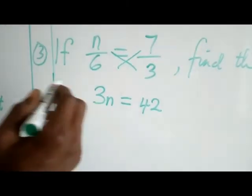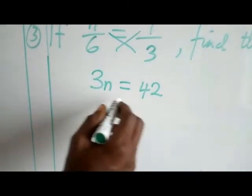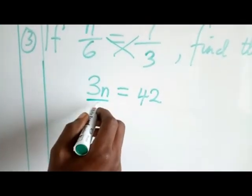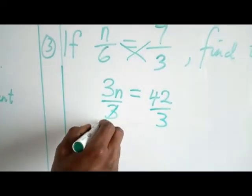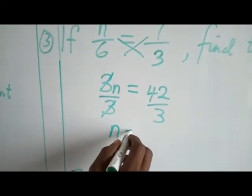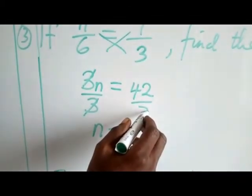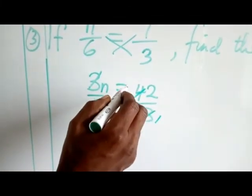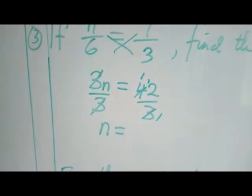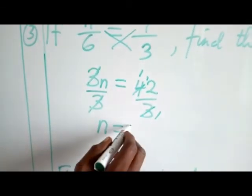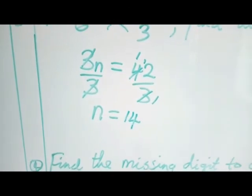We are going to make n the subject of the formula. What do we do? We now divide both sides by 3. 3 has cancelled itself. So I am left with n, which is 42 divided by 3. Let's do the division. 3 goes into 4 one time, remainder 1. You add the 1 to 2, it becomes 12. 3 divided by 12 is 4. So we have 14. Our n is equal to 14.